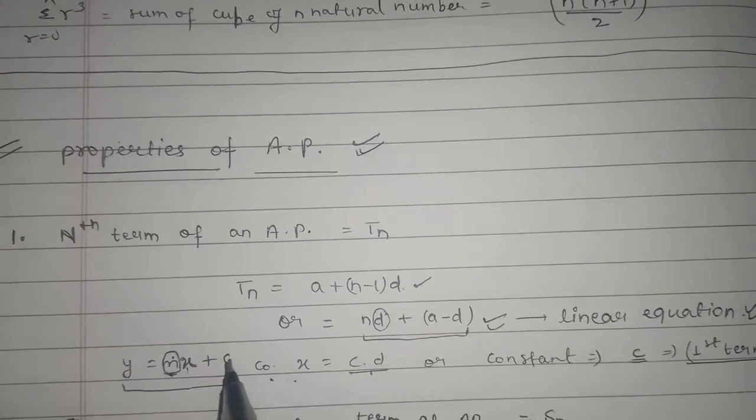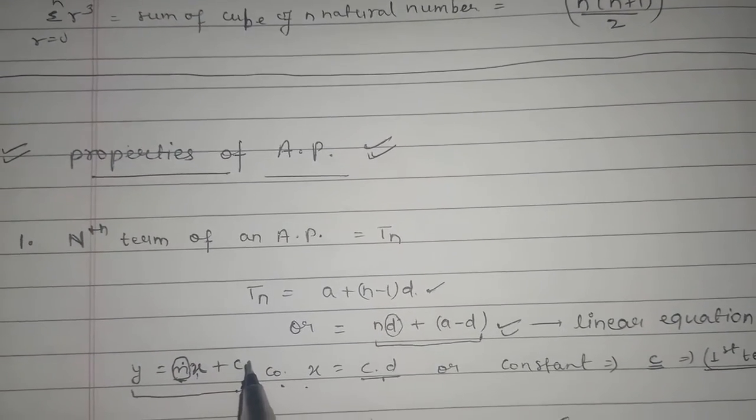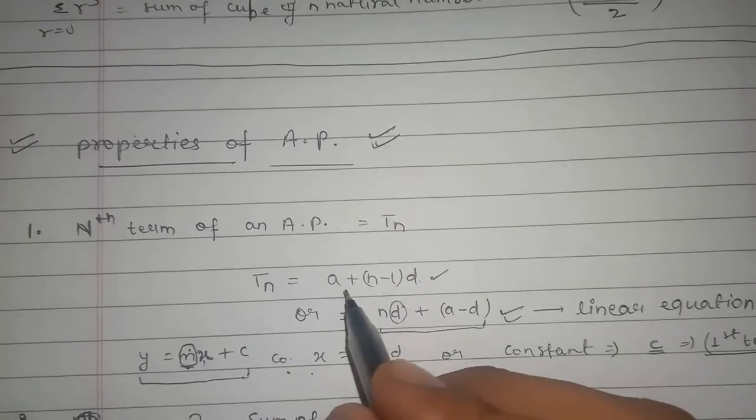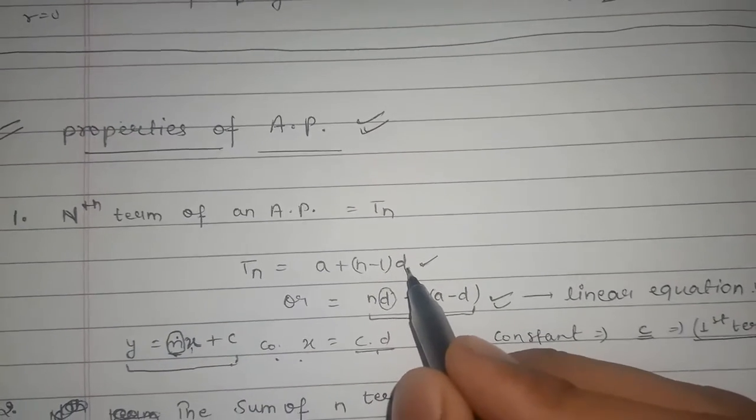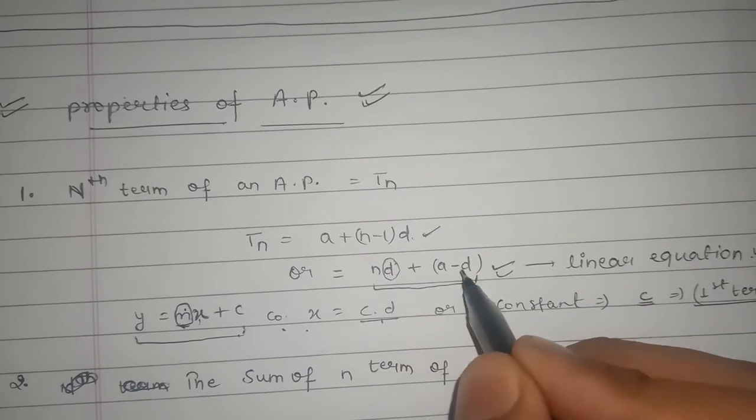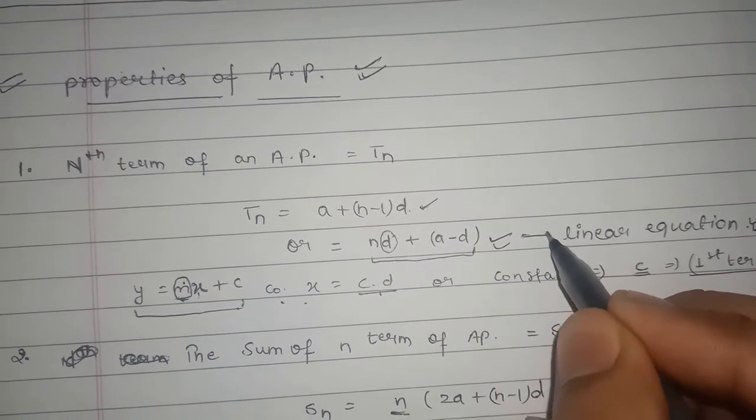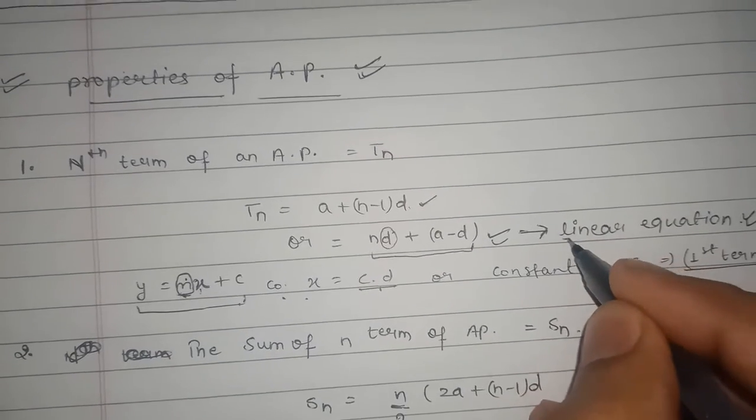Hello everyone, today we are discussing properties of AP. First property is the nth term of an AP, that is Tn, which is denoted as a + (n-1)d. Or by solving it we get nd + a - d. And by saying it properly we conclude that it is a form of linear equation.